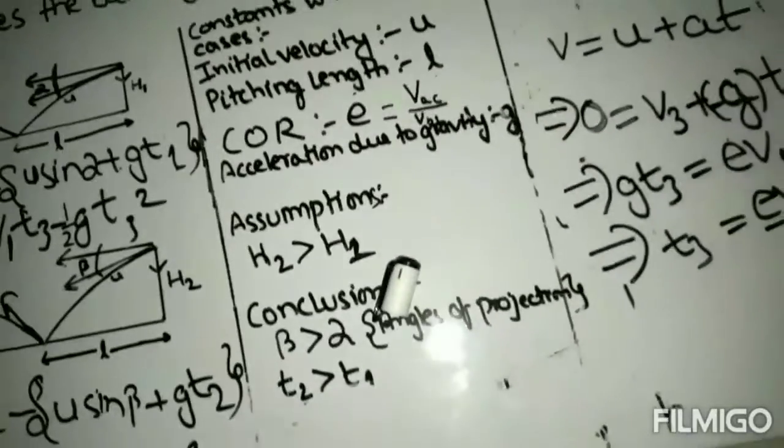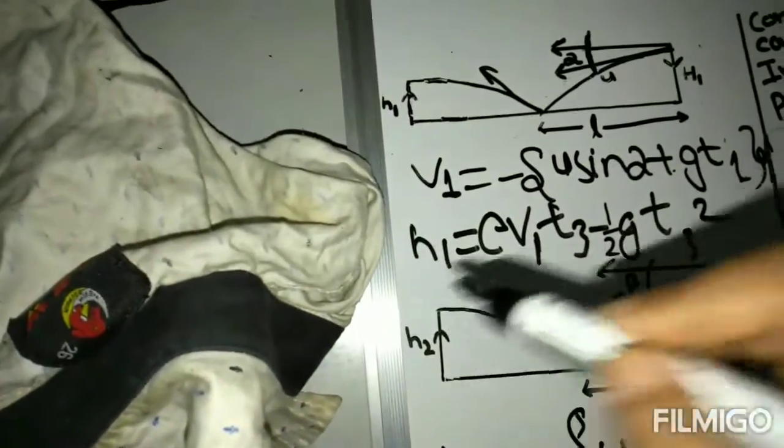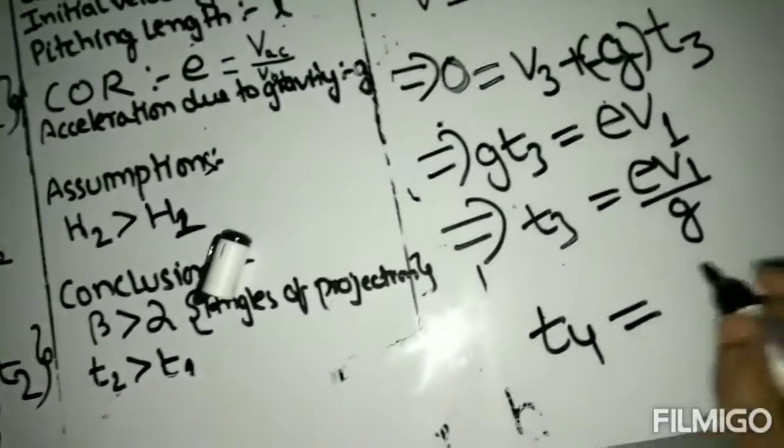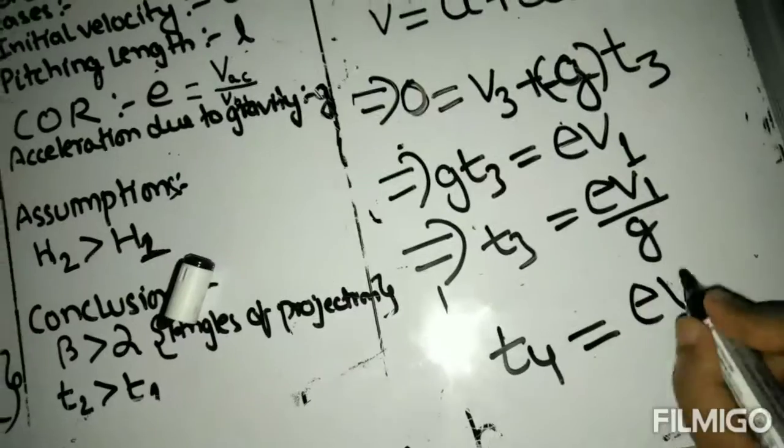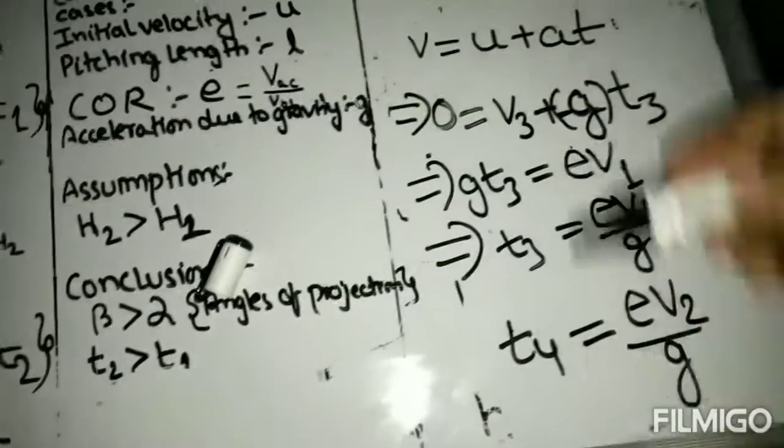Similarly, the t4, which is the time taken by the ball to reach its maximum bounce in case 2, will be equal to t4 equals to ev2 by g. Now, let's compare these two times.